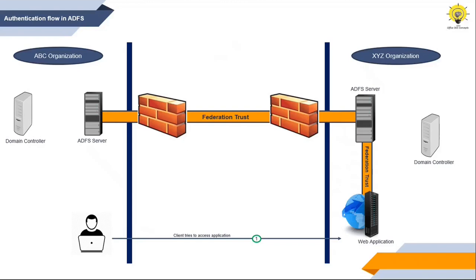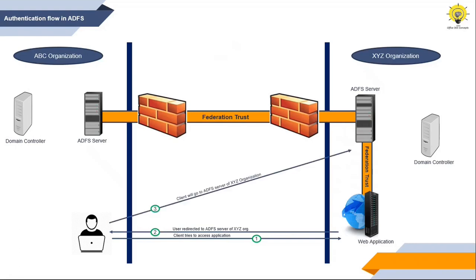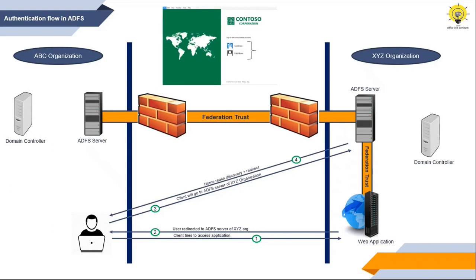When this request goes to the application, the application will ask the user to reach the federation server of XYZ organization because the application can't authenticate the user. The client will then go to the ADFS server of XYZ organization and ask for permission to access the application. The ADFS server of XYZ organization will identify that this user doesn't belong to XYZ organization, so the server will perform home realm discovery to find out which organization this user belongs to.